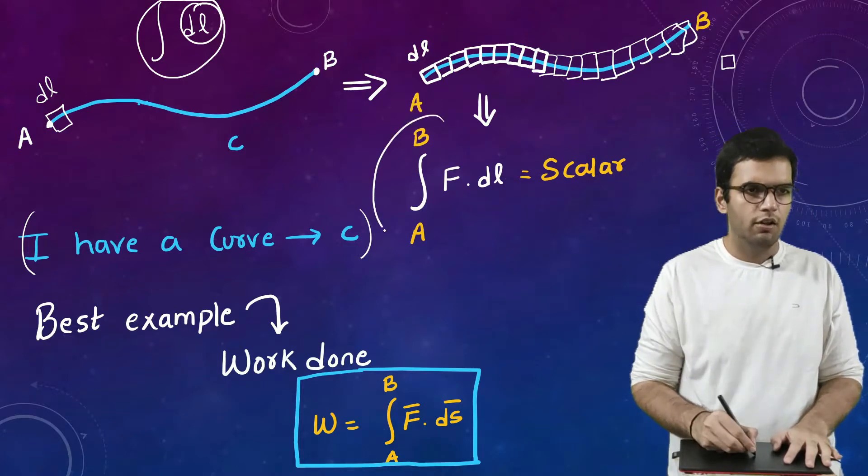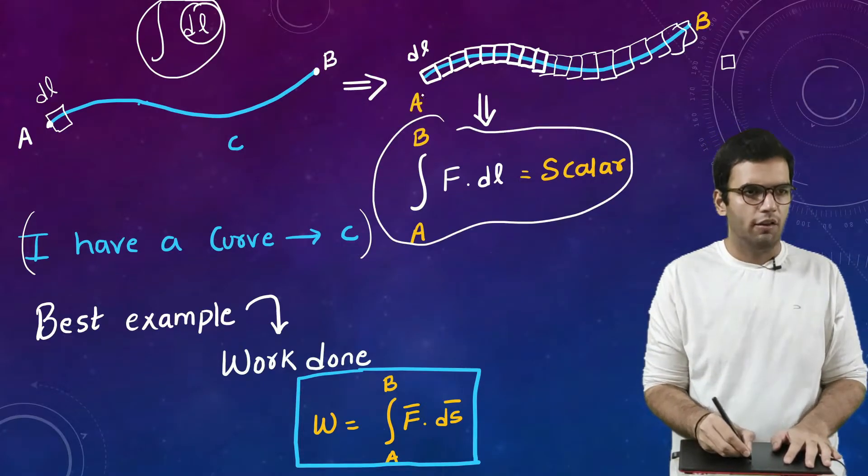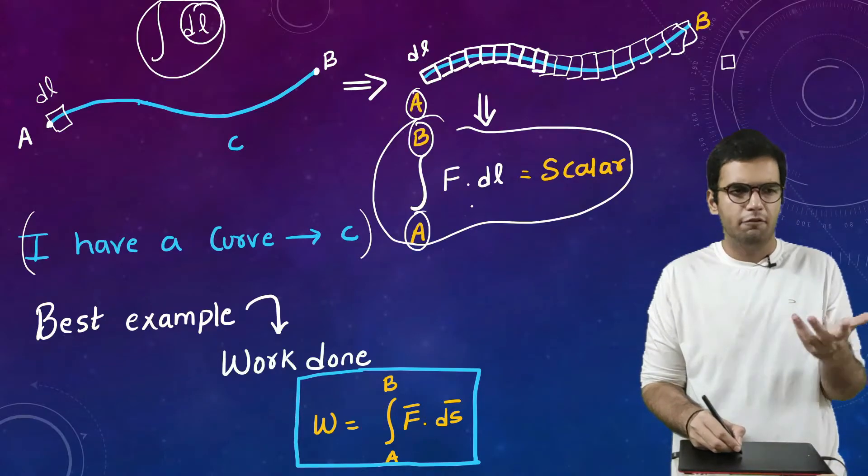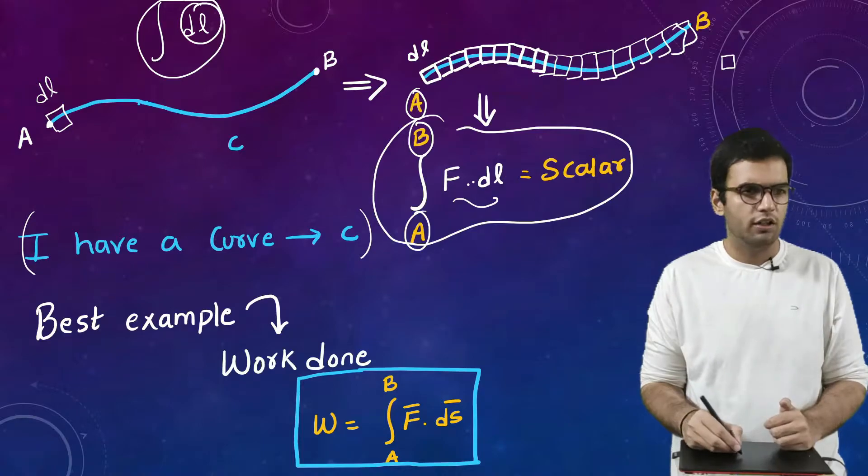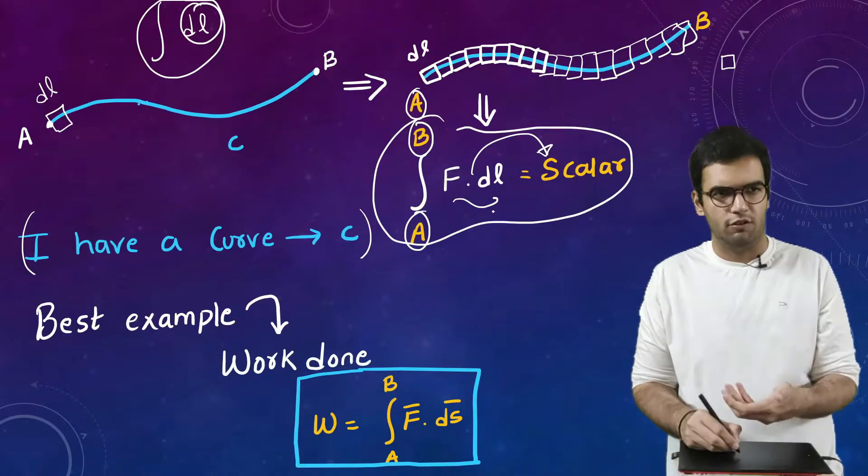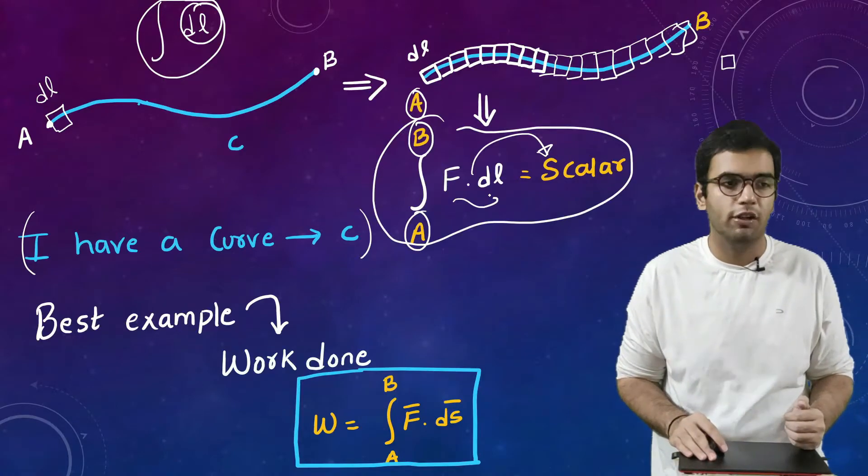So what I have done here is I had put the limit because I have to start from A, I have to end on B, and here I have written my function which is a dot product. So because it is a dot product so I will get a scalar as my answer. Dot product is also referred to as a scalar product.